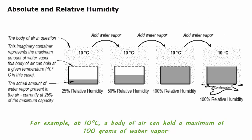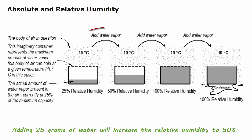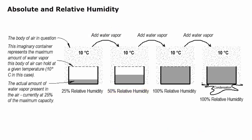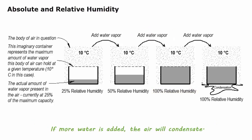For example, at 10 degrees C, a body of air can hold a maximum of 100 grams of water vapor. If the air currently contains 25 grams of water, its relative humidity is at 25%. Adding 25 grams of water will increase the relative humidity to 50%. Adding 50 grams more will reach the maximum capacity the air can hold, making relative humidity 100%. If more water is added, the air will condensate.